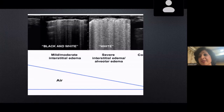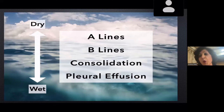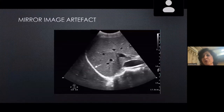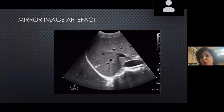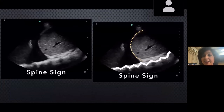From black to white represents mild to moderate to severe interstitial edema and alveolar edema, then consolidation turns things dark again. A normal dry lung shows A-lines; as it becomes a wet lung you start seeing B-lines, consolidation, and pleural effusion — all abnormal. The mirror image artifact — a reflection from the diaphragm showing the liver mirrored beyond the pleura — tells us everything is normal. The spine sign, where pleural effusion is so large you can visualize the spine, helps diagnose pleural effusion.